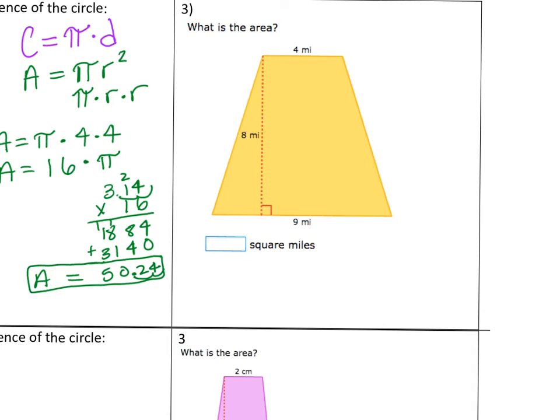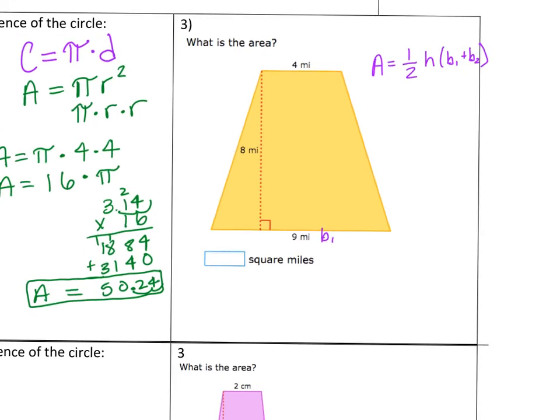Area equals 0.5 times the height times base 1 plus base 2. So let's say that this is base 1. Let's say that this is base 2. And then this is the height. So we have the area equals to 0.5 times 8 times the base 1, which is 9, plus 4. 9 plus 4 is 13. 13 times 8 times 0.5.